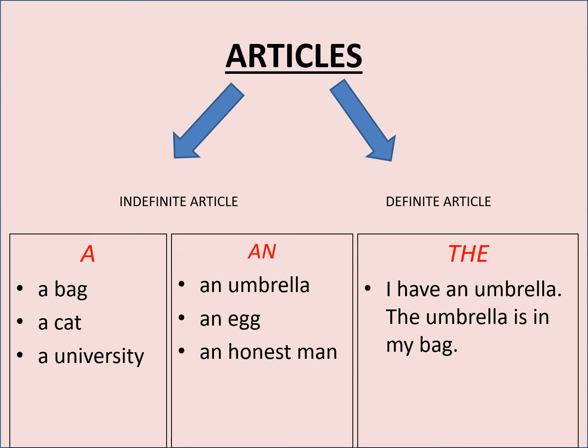'An' is used before words which have a vowel sound. For example, an umbrella, an egg, an honest man — though the spelling starts with an H, we pronounce it as 'Honest' with an 'O' sound, so we use 'an'. 'A' and 'an' are basically used before nouns where the identity is not known to us — we are introducing that thing for the first time. But 'the' is used before nouns where the identity is known to the reader. For example, 'I have an umbrella. The umbrella is in my bag.' The first time I mention umbrella I use 'an', but the next time I use 'the' because we've already talked about that umbrella. I hope this is clear.